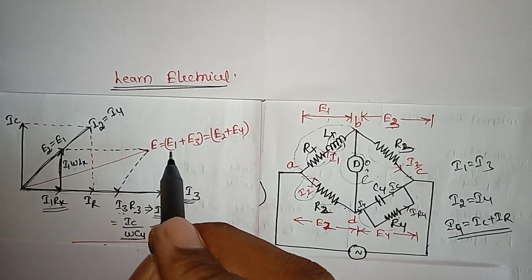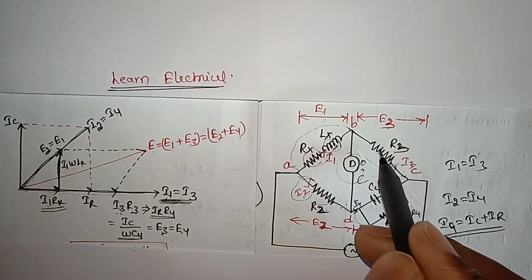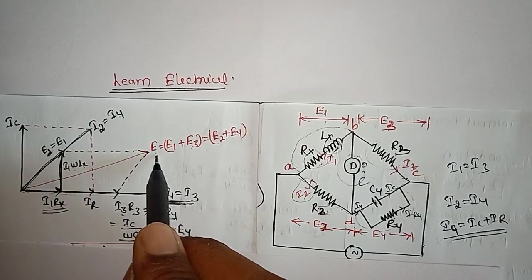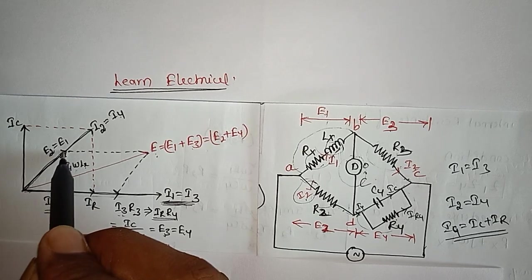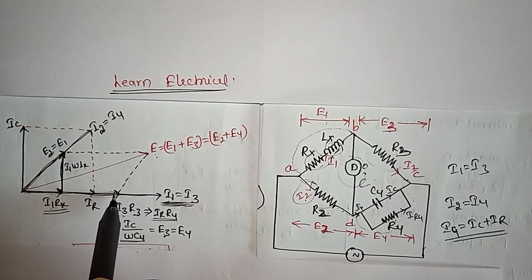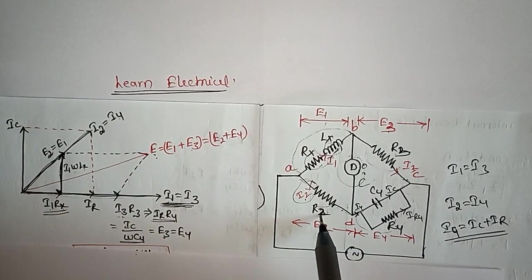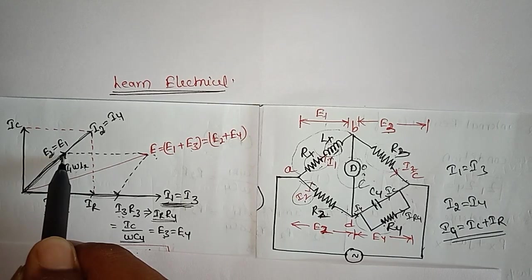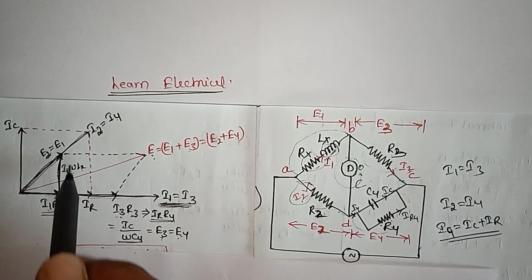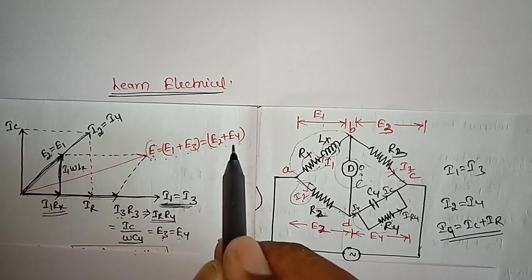Adding E1 and E3 gives the total supply voltage E, and similarly adding E2 and E4 also gives the total voltage E. The vector E1 and vector E3 are added to get E; likewise E2 and E4 are added. Since E3 = E4, both paths give the same total voltage, confirming the balance condition.